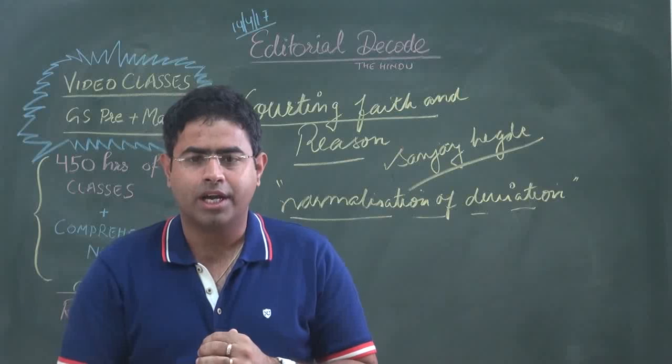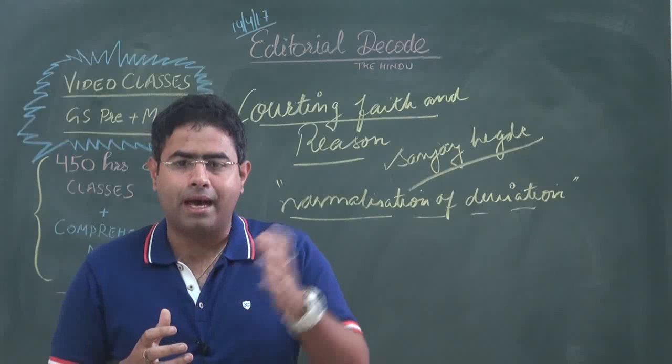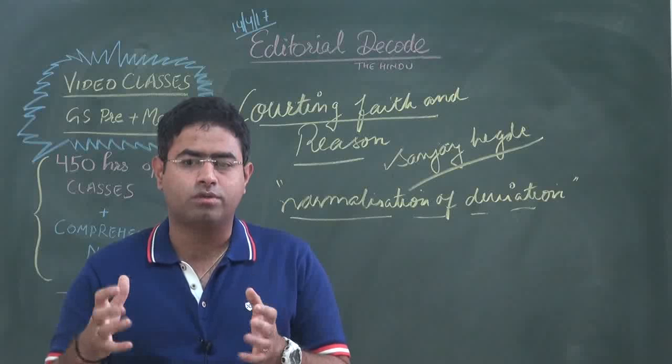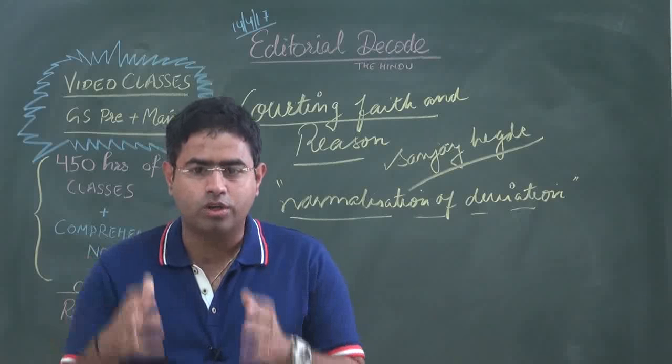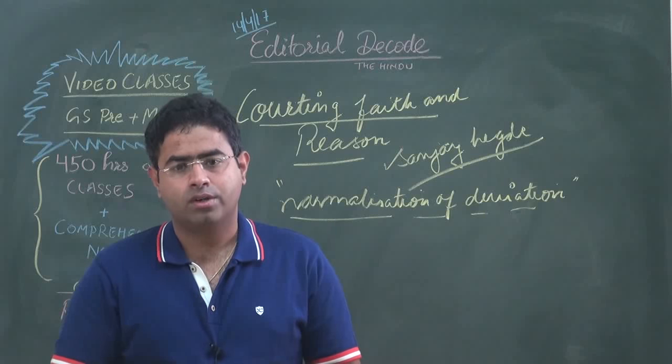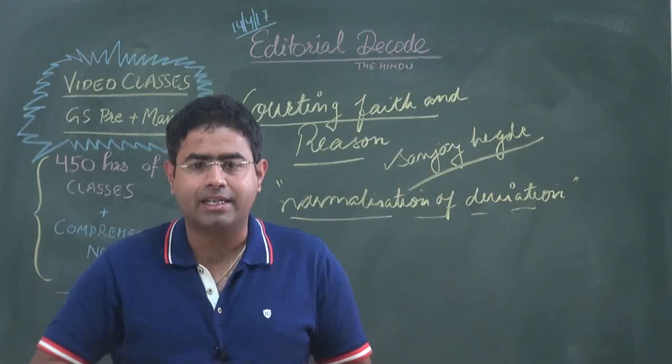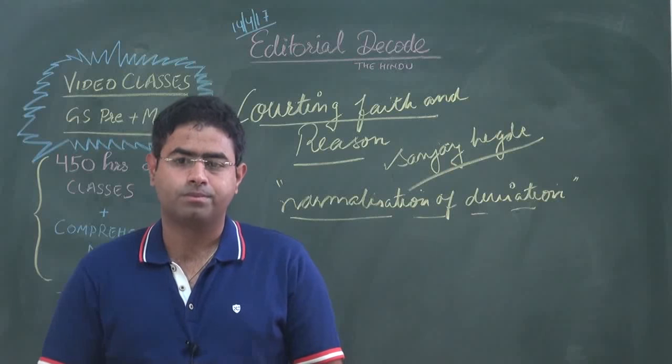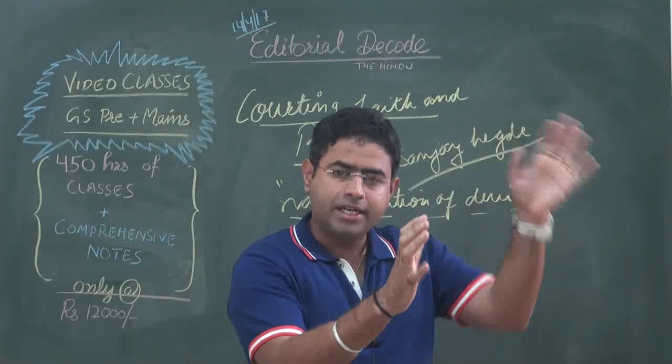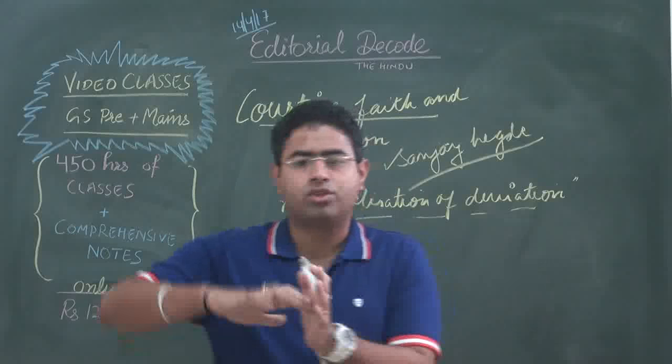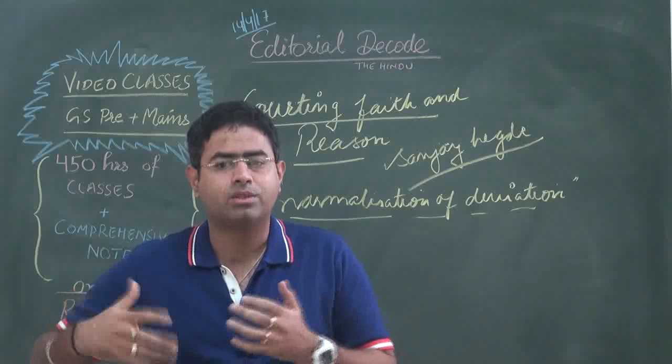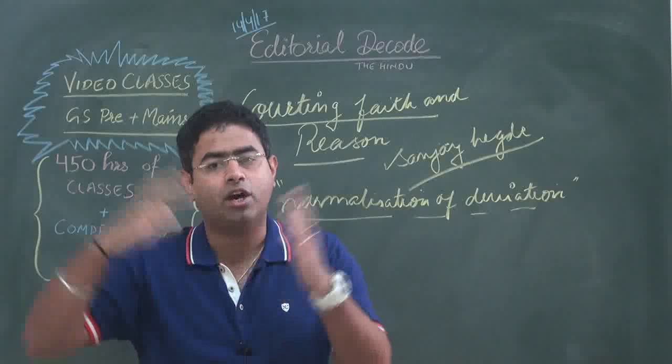When India got its independence, the partition of the nation also took place. Pakistan was created on the basis of the two-nation theory, which had religion underlying it. Pakistan was created with the logic that it wanted a separate Muslim nation, and India was created with the logic that India wants to be a secular nation. That was the message given by India when it got its independence.